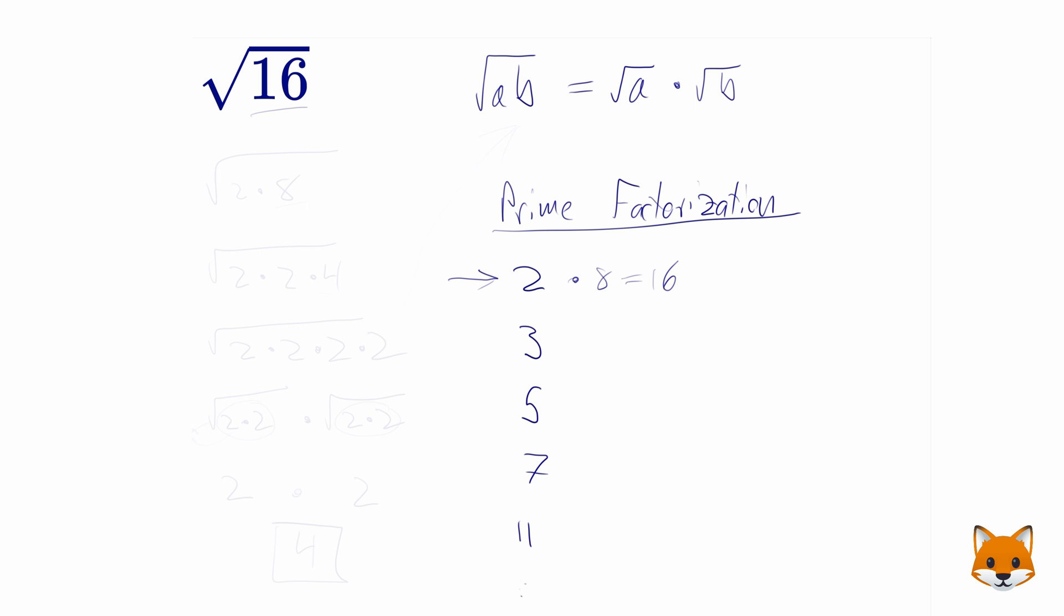So let us rewrite 16 as the square root of 2 times 8. Now, we're not done here because 8 is itself not a prime. So we have to repeat this process again.